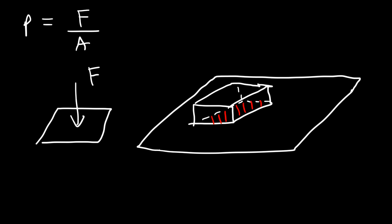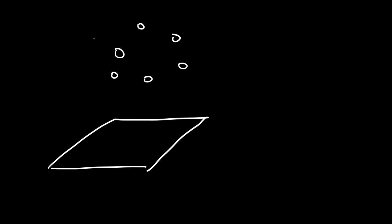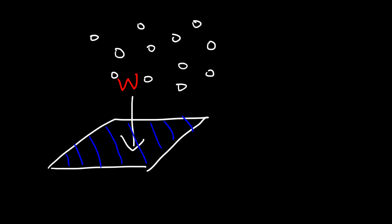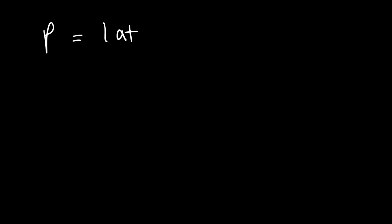The book exerts pressure over the area shaded in red. Atmospheric pressure is based on the weight of the atmosphere exerted on a surface. The gas molecules in the air have mass, and anything that has mass can exert a weight force on a surface. So atmospheric pressure is essentially the weight of all the air molecules above a given area. At sea level, the atmospheric pressure is 1 atm, equal to 101,325 pascals.